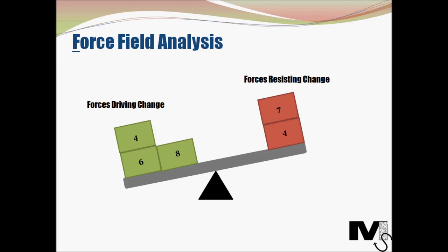In this example we see that the forces driving change are numbered 4, 6 and 8 — those are the actual scores or weights of those factors — and they outweigh the forces resisting change. So change management is going to be a smoother process in this particular example.